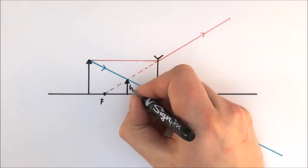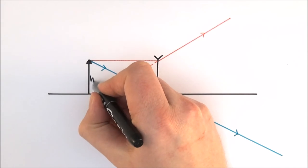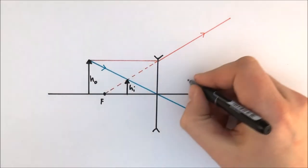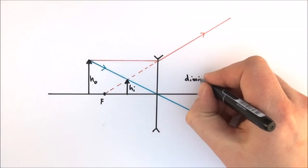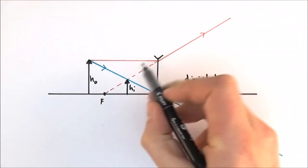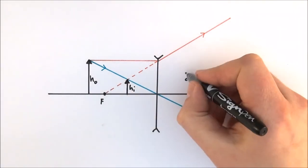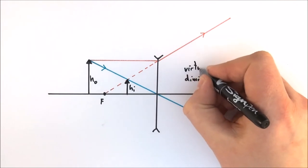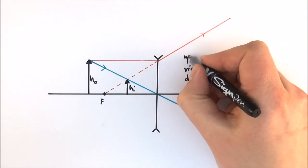We have the image, and what we can see is that the height of the image is smaller than the height of the object. For that reason, what we have is something which is smaller, or we can say it's diminished. Because it's formed by a virtual ray, it's a virtual image, and finally, the image is upright.